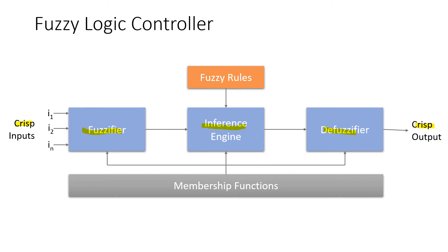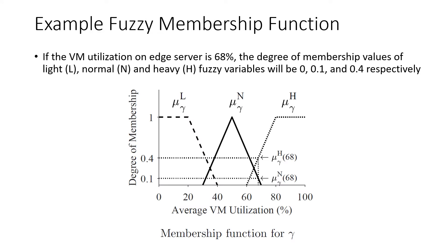The main elements of the fuzzy logic controller are the membership functions and the fuzzy rules. We use membership functions to quantify a linguistic term. For each fuzzy variable, a set of membership functions are defined. A fuzzy rule is a simple if-then rule with a condition and a conclusion. The membership functions can be in different forms such as triangular, trapezoidal, Gaussian, or singleton. We chose the triangular form, which is the most commonly used one due to its low complexity on fuzzy logic controller steps.